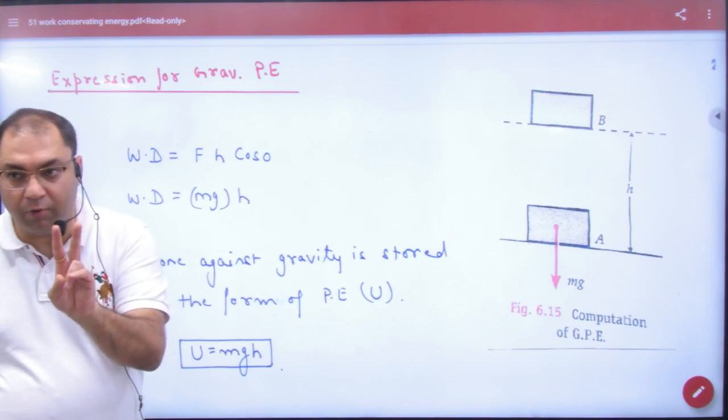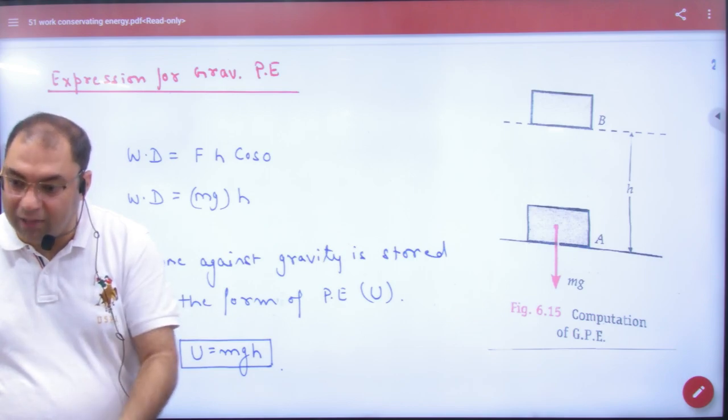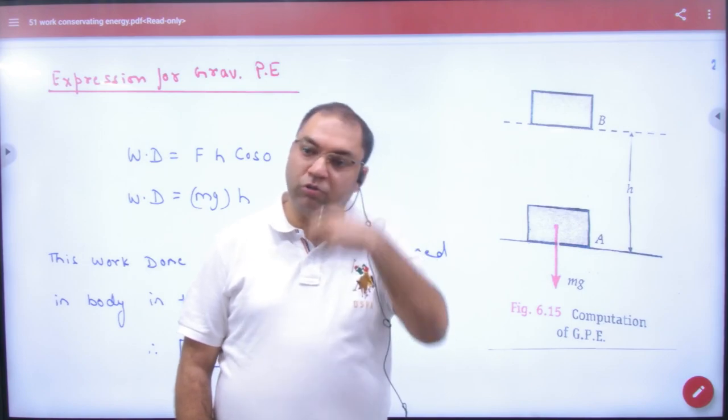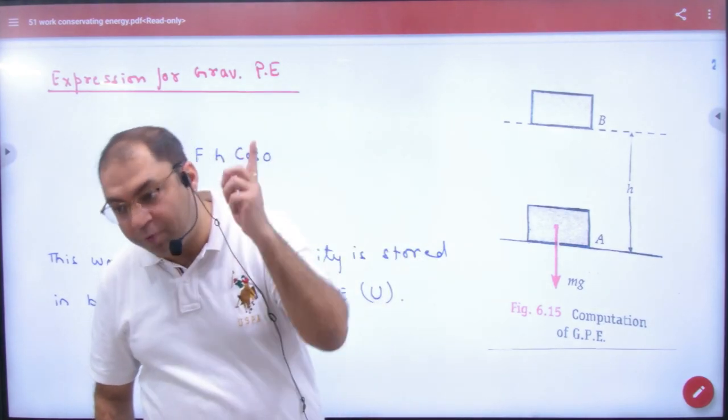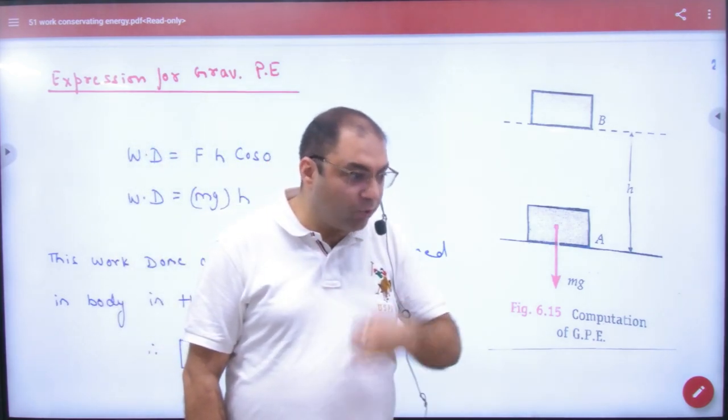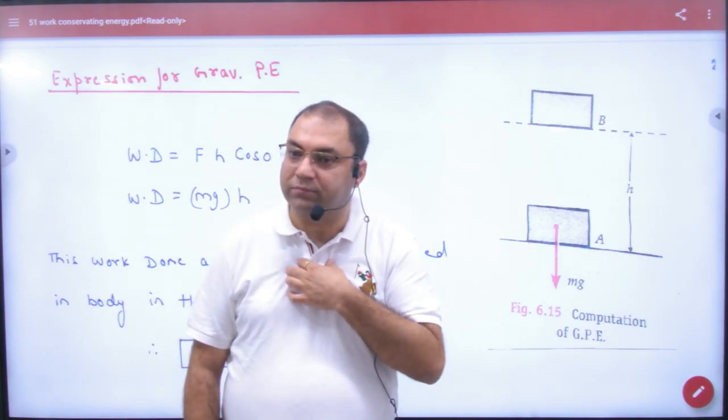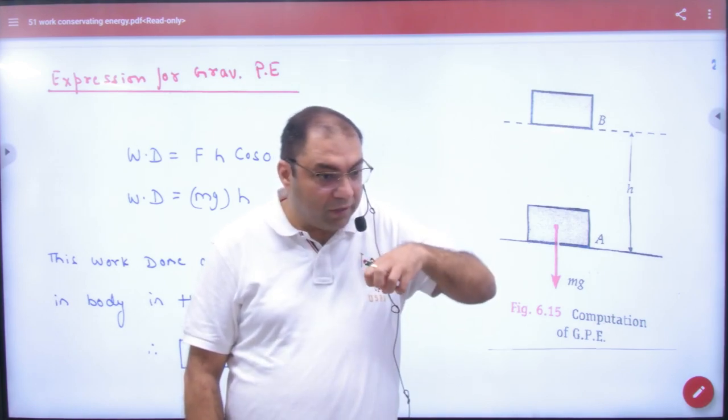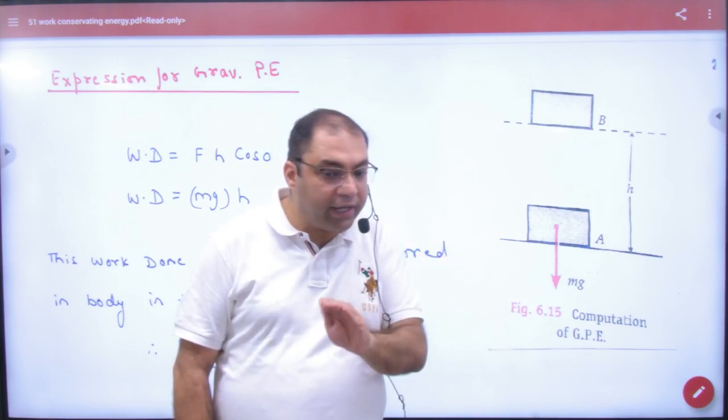Two entities do work on the body: one is me and one is earth. Earth says that its force is downward. If the body is going up, then the work done by earth is negative, because the force is downward but displacement is upward. But the external agent lifting it up says: I will apply force upward, displacement is upward, so my work done is positive, which is MGH.